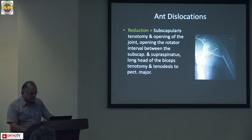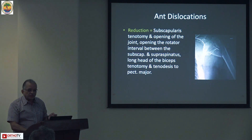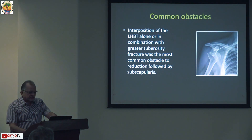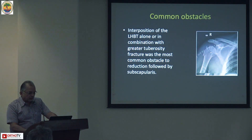The long head of biceps can either be retracted or you can do a tenodesis after tenotomy and stitch it to the pectoralis major. The common obstacles are interposition of the long head of biceps tendon alone or in combination with the greater tuberosity, which is usually the commonest obstacle while reducing the humeral head.